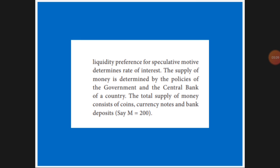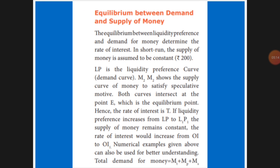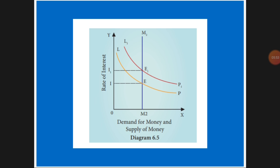This can be explained by equilibrium between demand and supply using a diagram. LP is liquidity preference. M2 shows the supply curve of money for speculative motive. The money supply is constant, shown as a blue color line. The interest rate increases or decreases — according to that, liquidity in the curve increases or decreases. Both curves intersect at the point E.